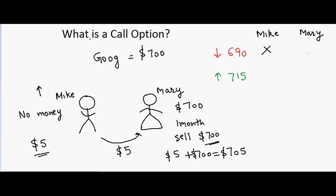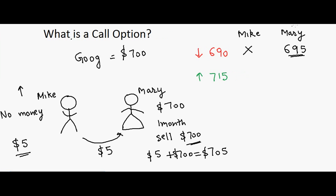In the downside case for Mary, she lost $10 on the stock but made $5 from Mike, so she ends up with $695 — a net loss of $5.